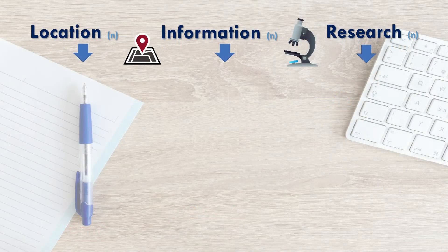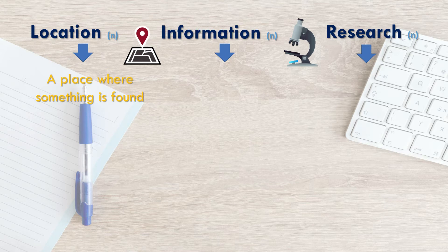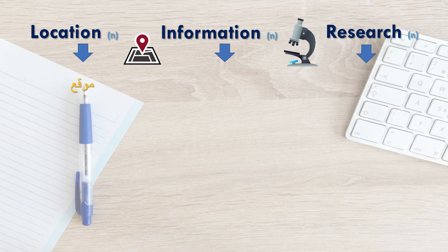'Location' is a place where something is found. 'Information' refers to facts about a situation, person, event, etc.